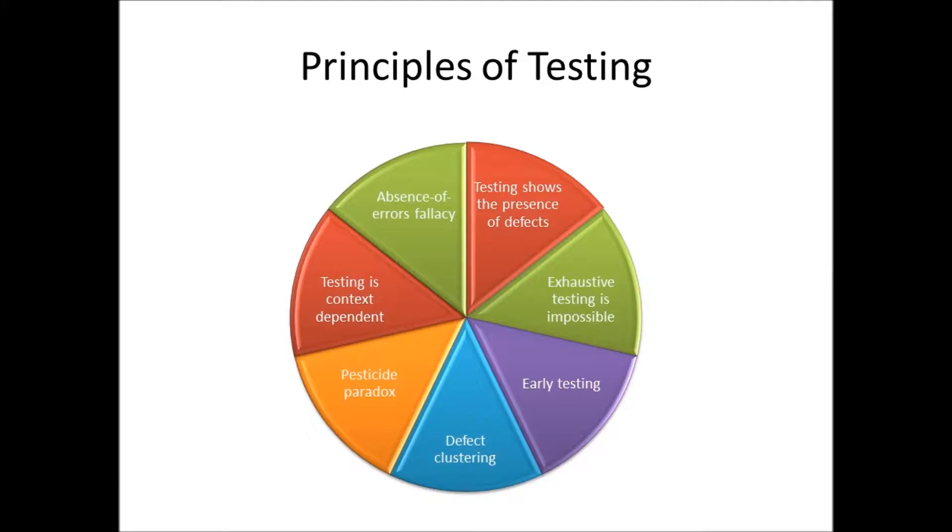There are some theoretical ideas and principles that have been established over the last several years when it comes to testing. Seven principles have been established. Principle 1: Testing shows the presence of defects, which means that testing can't prove there are no defects. However, testing can reduce the number of undiscovered defects remaining in the software.